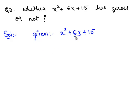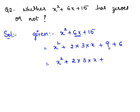The middle term 6x can be written as x square plus 2 times 3 times x plus 15 can be written as 9 plus 6. So this is x square plus 2 times 3 times x plus 9, which is 3 square, plus 6.